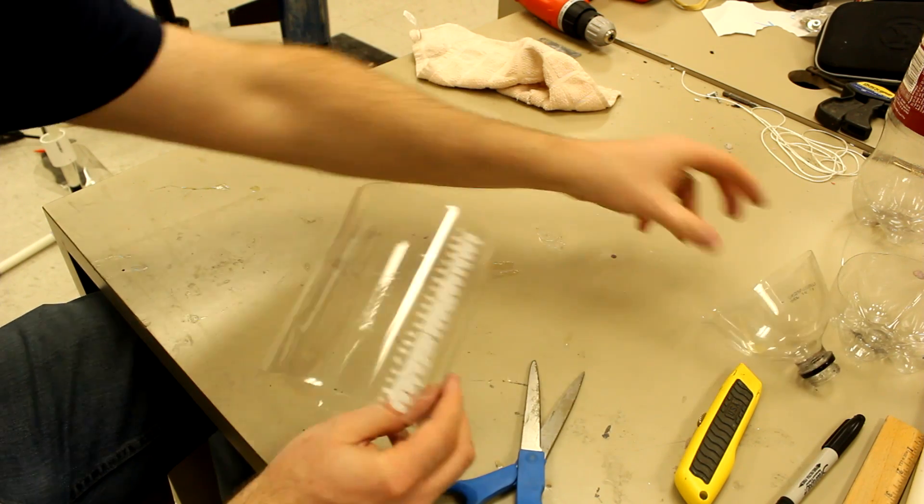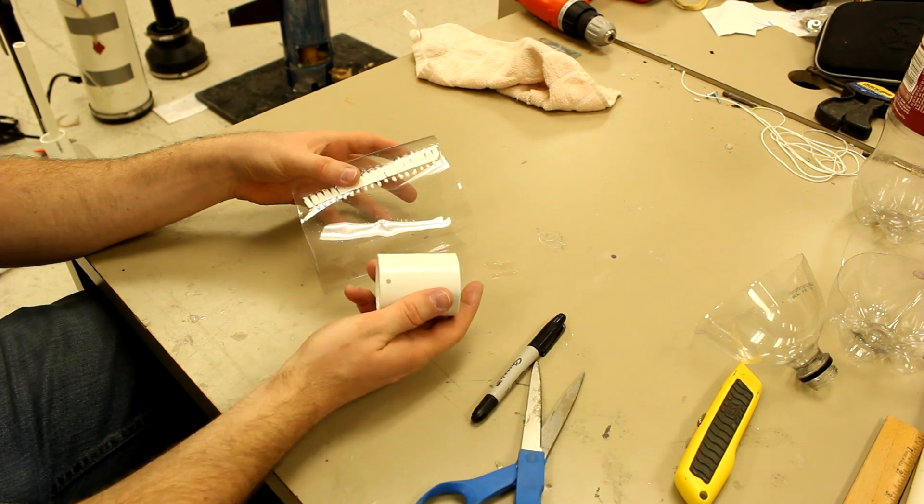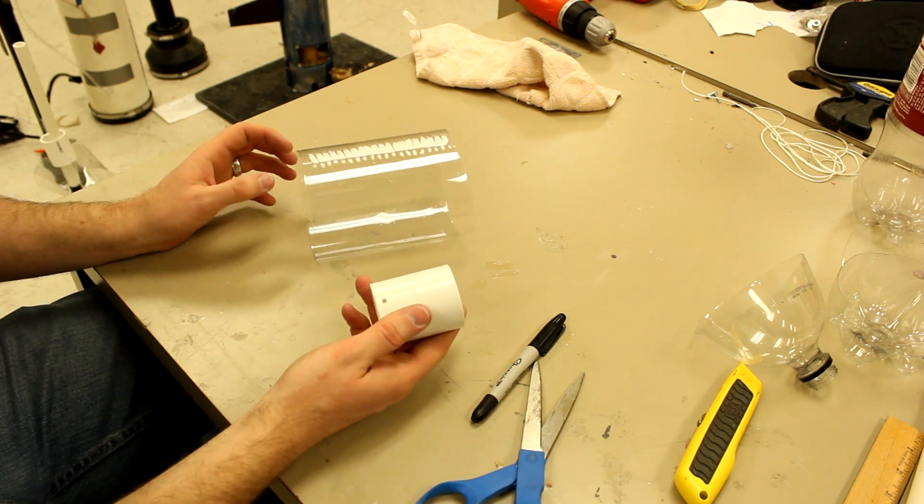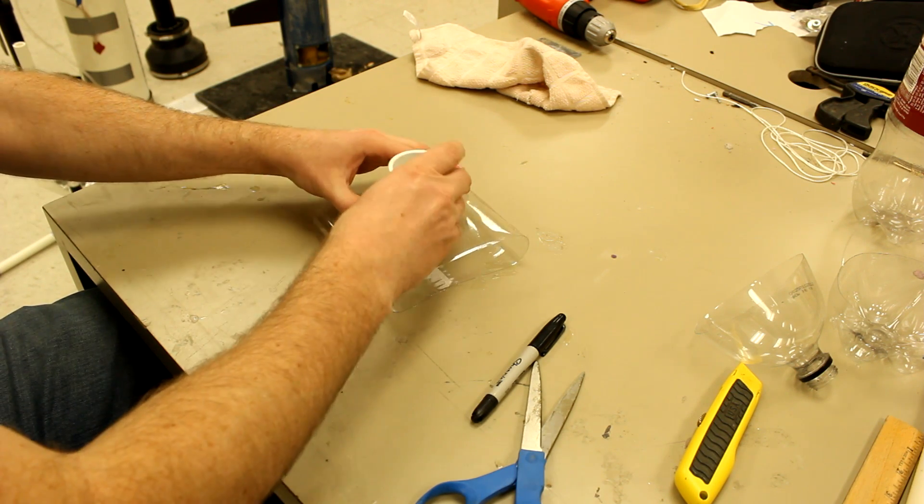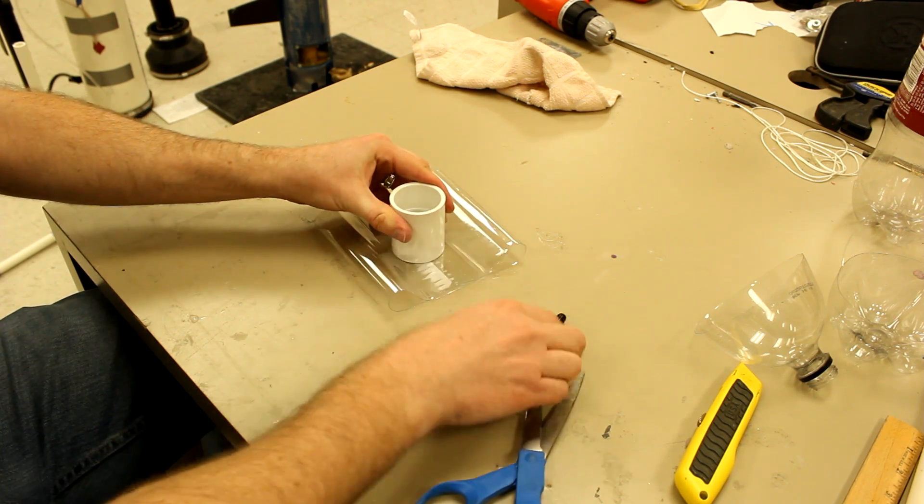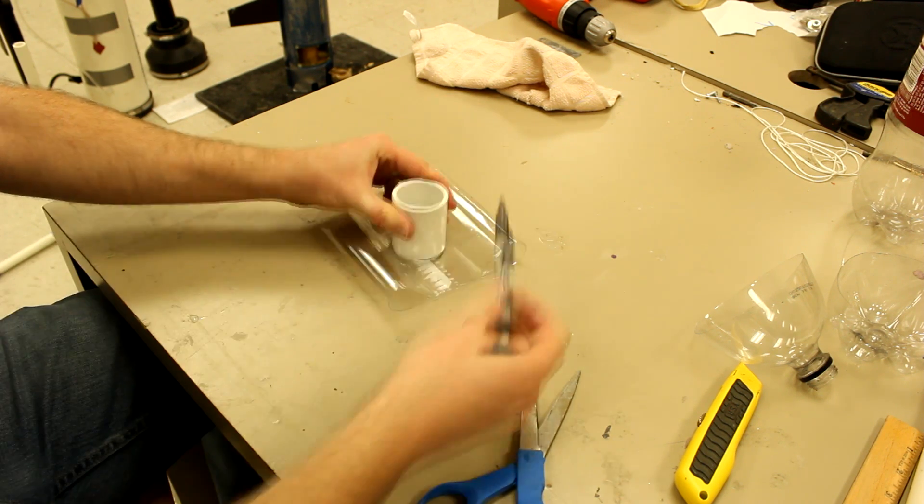We're going to go ahead and use our Sharpie, or other permanent marker, with our one and a quarter inch couple. And we're going to take this and put it roughly in the center. And what you want to do is trace the inside of that onto your spring. Then we're going to take a spare piece of pipe,